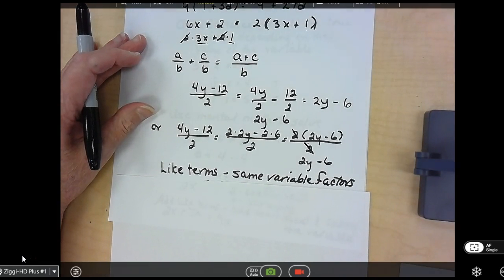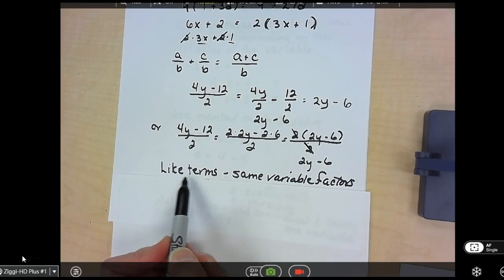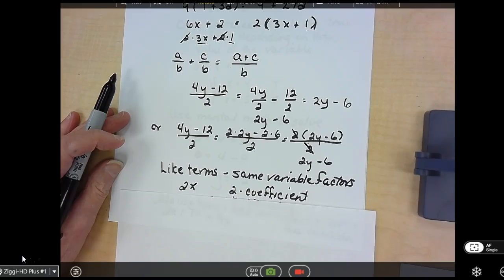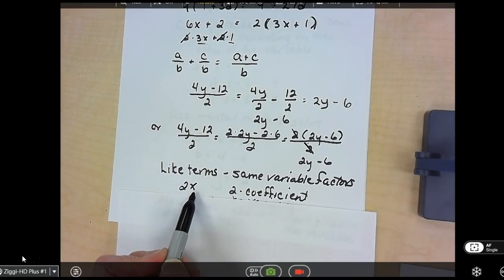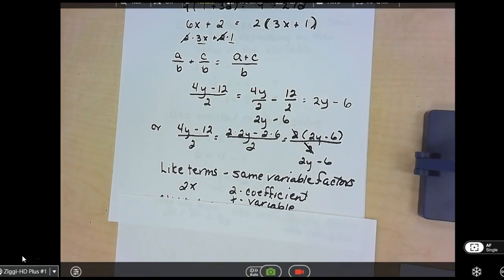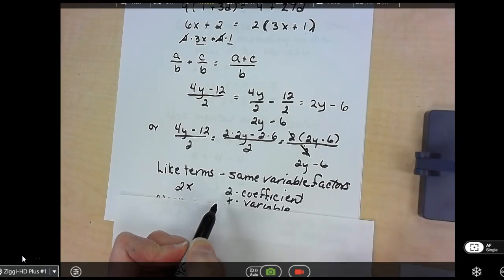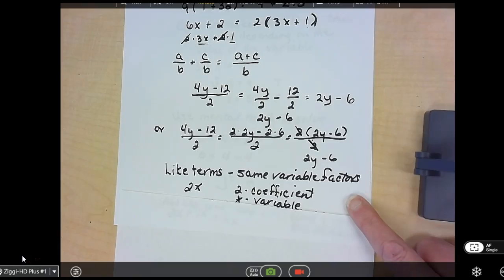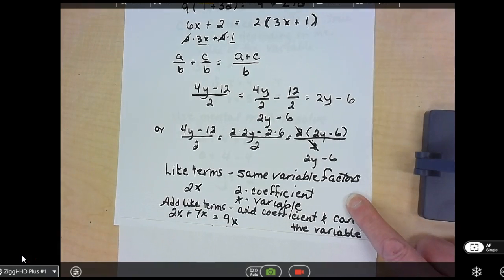Our like terms, to be a like term, they have the same variable factors. If I look at a variable of 2X, 2 is the coefficient. I used that word before. Coefficient is the number in front of the variable. And the variable is just the letter. So in this case, X. So if they have the same variable term, we can add those like terms. And all we have to do is add the coefficient and carry the variable.